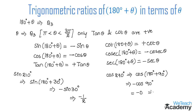Remember that 180 degrees plus theta lies in the third quadrant, and in the third quadrant only tan and its reciprocal cot are positive. Hope you understood the concept. Refer to more videos on trigonometry on our website vteachacademy.com. Thanks for watching, have a nice day.